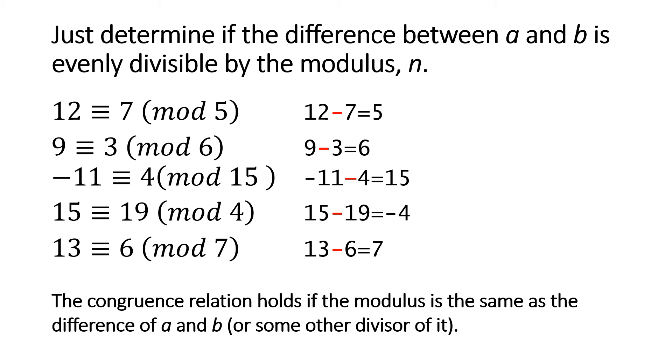Again we don't need to worry about the sign. 13 is congruent 6 mod 7, and that's correct because 13 minus 6 equals 7.